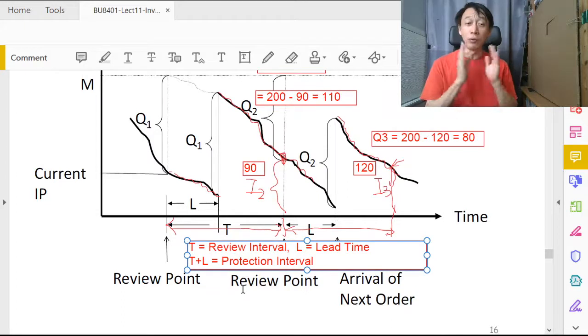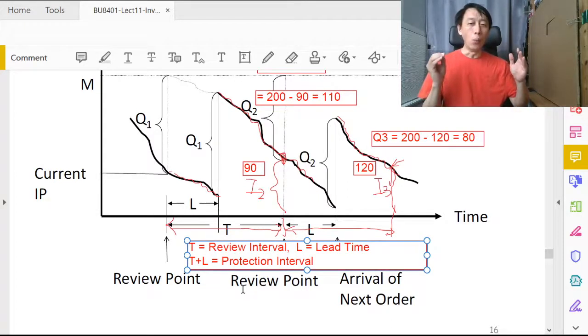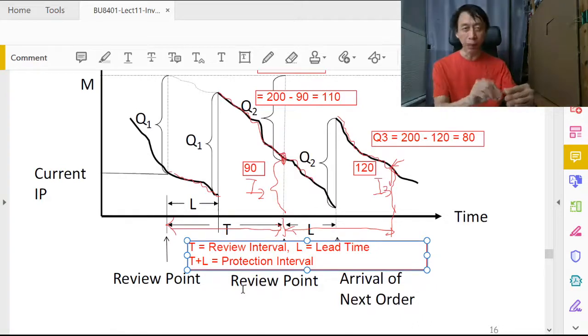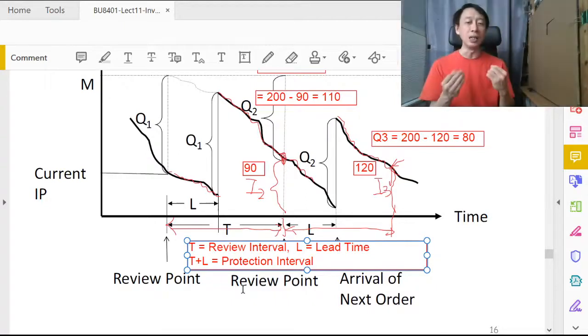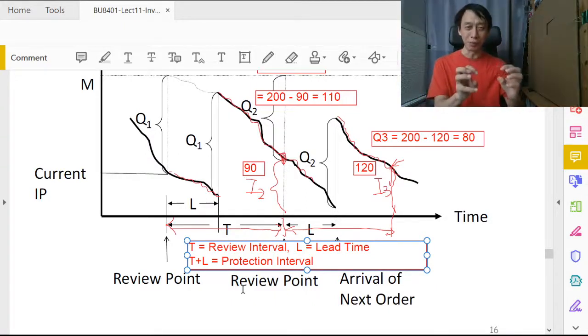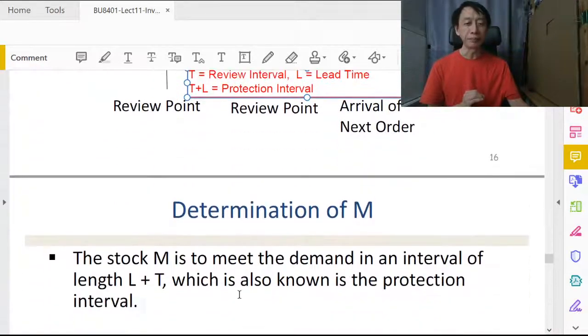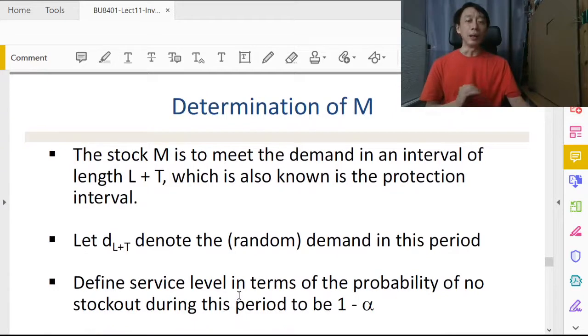If you watched the continuous review with dynamic demand lesson, we talked about demand during lead time. The T plus L part, demand during the protection interval, is the same concern. We have the same need of knowledge for that duration about the demand. So we need to establish demand behavior during the protection interval. The way to determine M, given that T plus L is of concern to us, is going to be something like this.